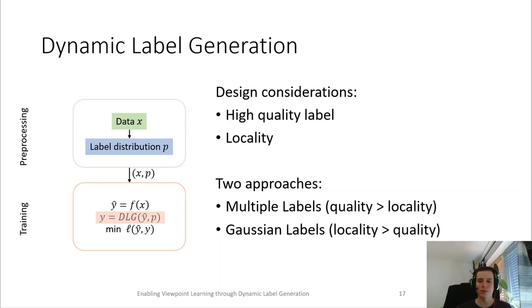The first one, the multiple labels, prefers quality over locality. The second one, the Gaussian labels, has a higher locality constraint. Later, we will combine these two methods for optimal performance.